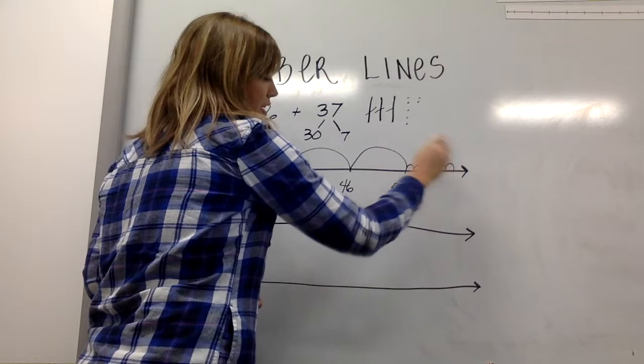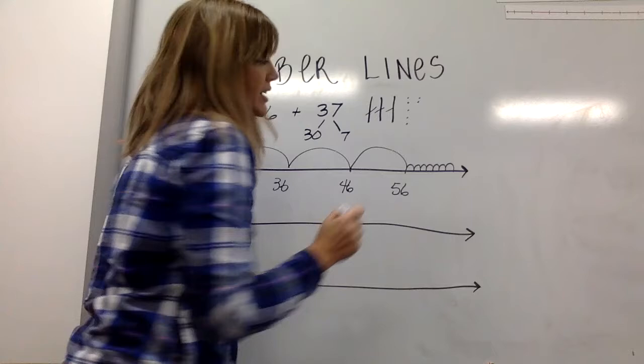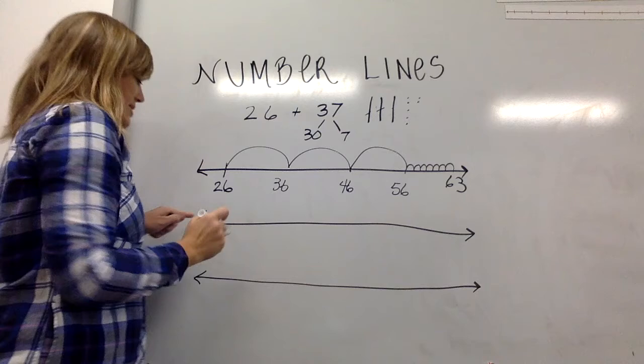Now what do I have left? I have seven ones. One, two, three, four, five, six, seven. 57, 58, 59, 60, 61, 62, 63. Okay and get our seven ones there.